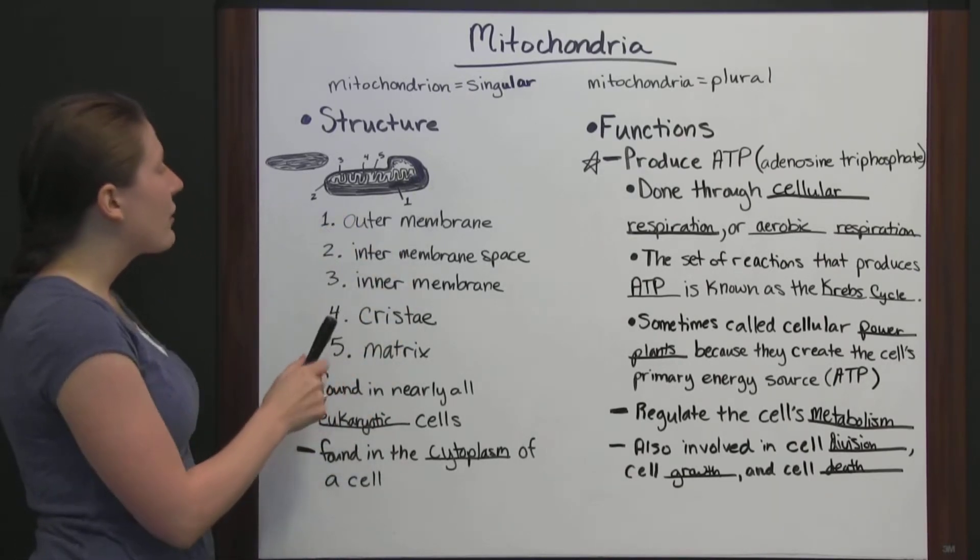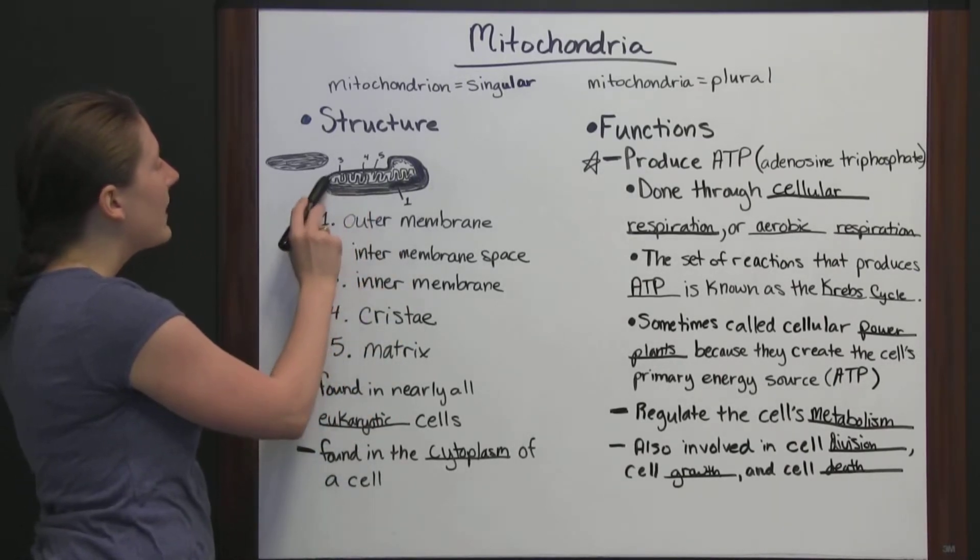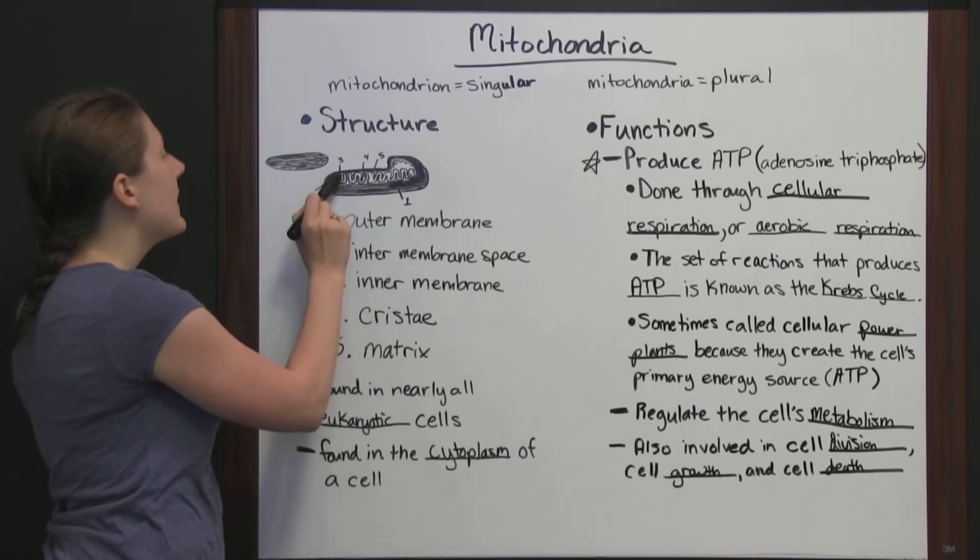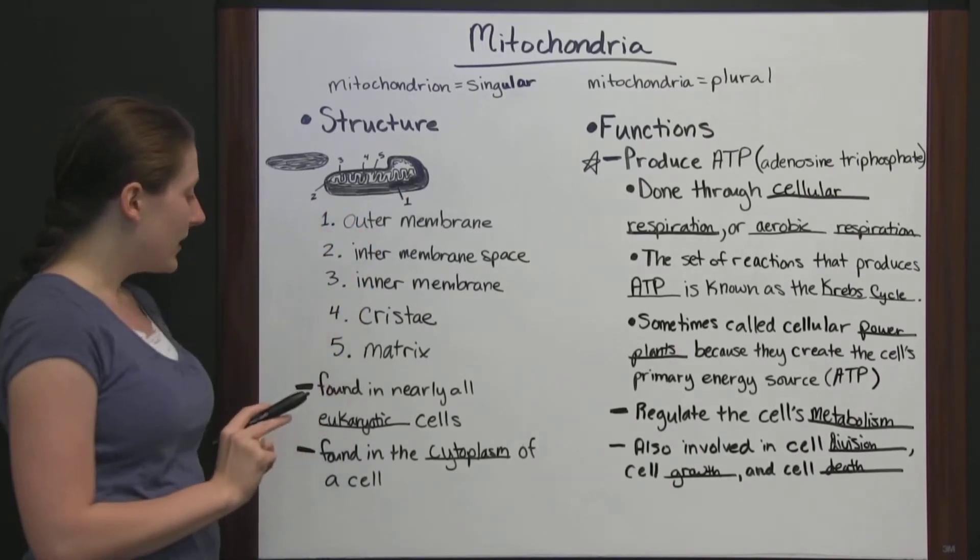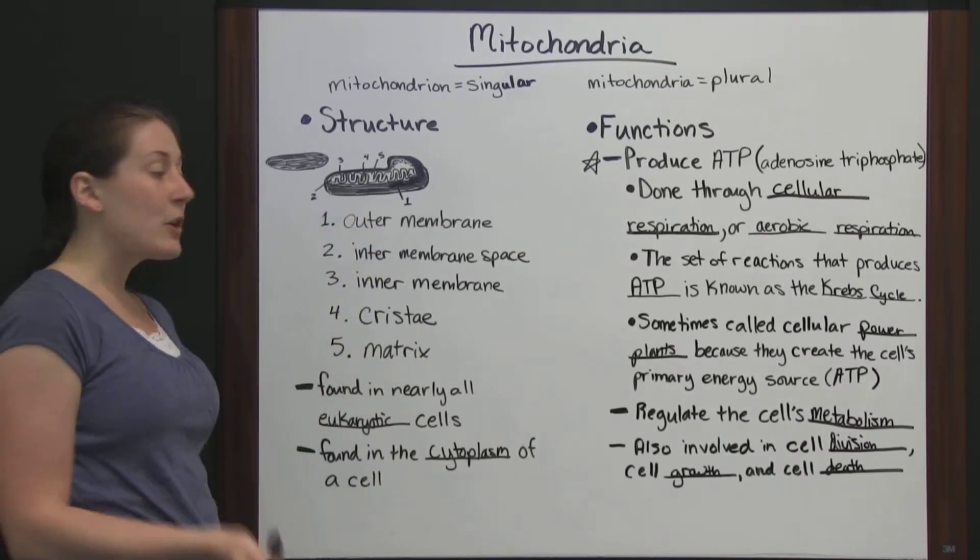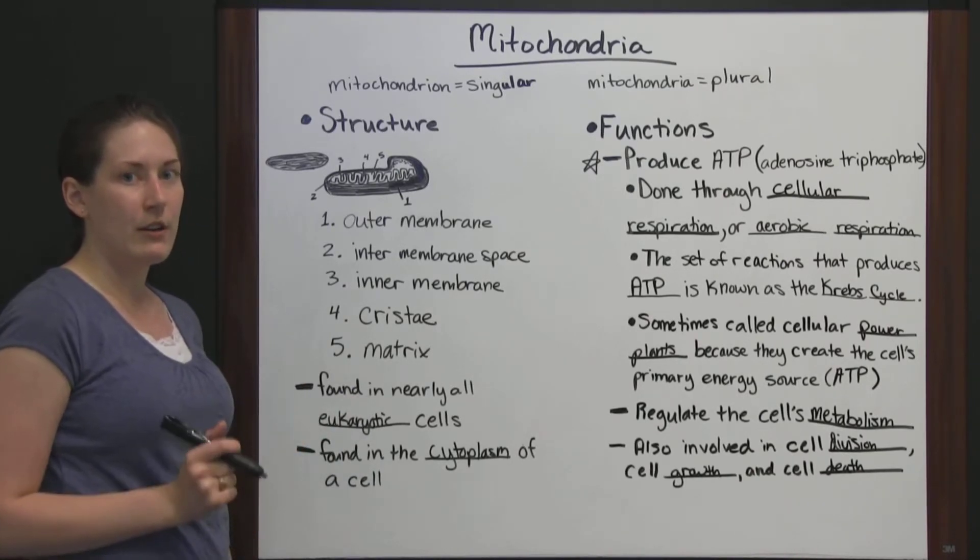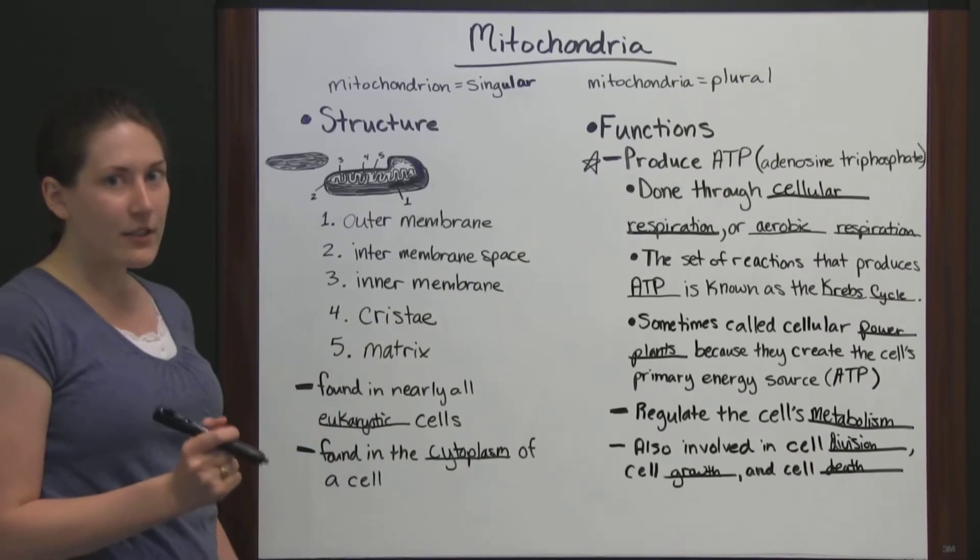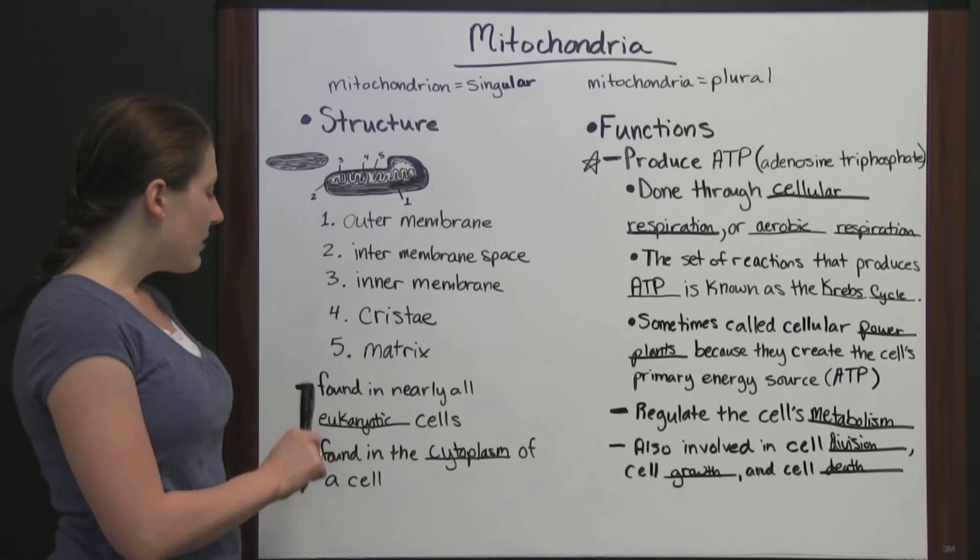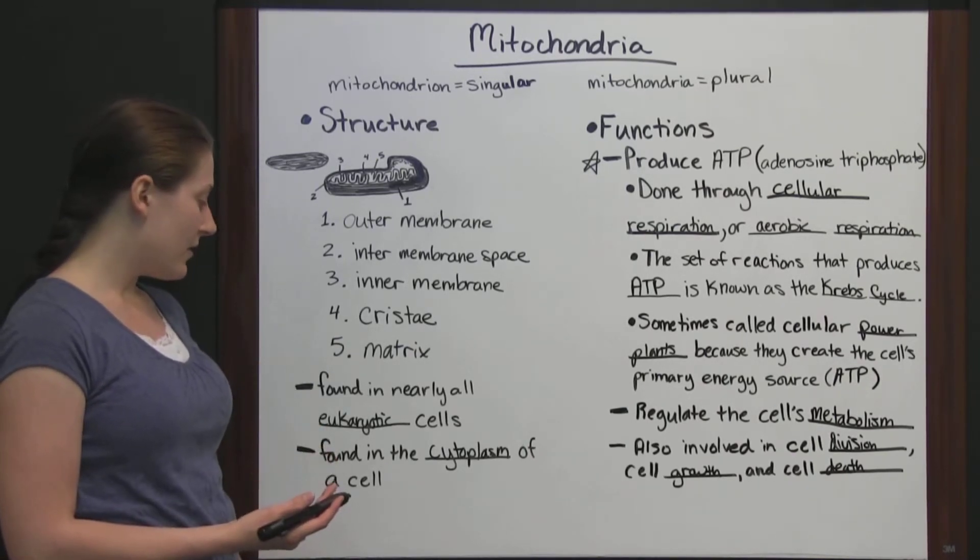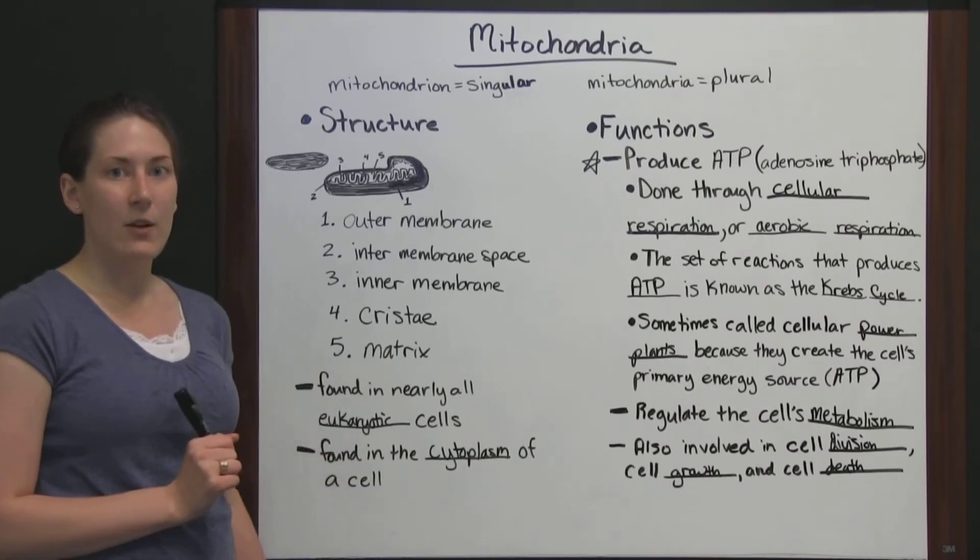You've got your structure, so remember outer membrane, intermembrane space, the space between the two membranes, intermembrane, cristae between those folds, and the matrix. Remember that mitochondria are going to be found in eukaryotic cells, and they're found in almost all eukaryotic cells, but not every single one. And most eukaryotic cells will have at least one, but they could have a lot of mitochondria, and you're going to find them in the cytoplasm.